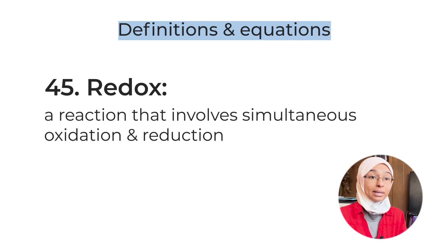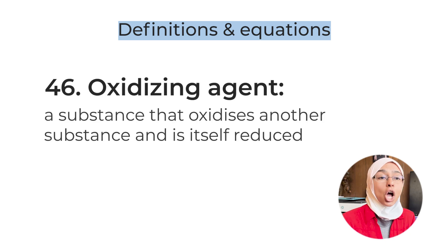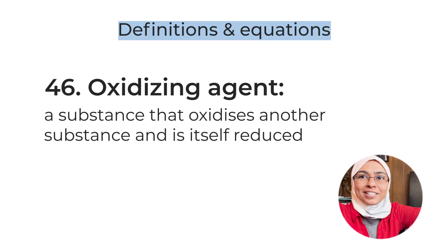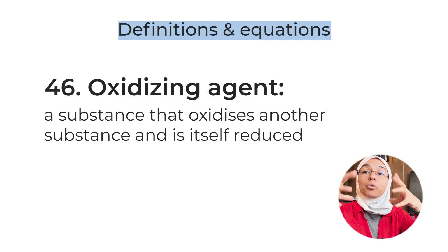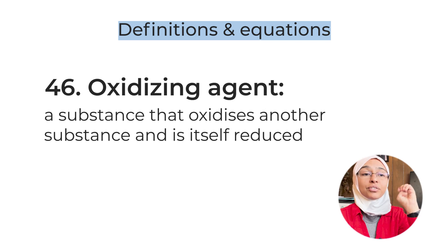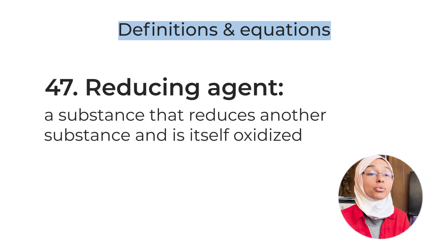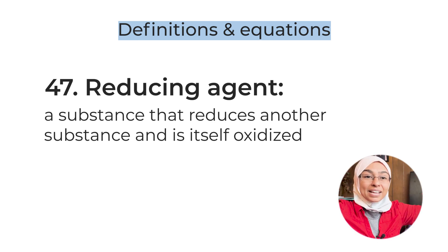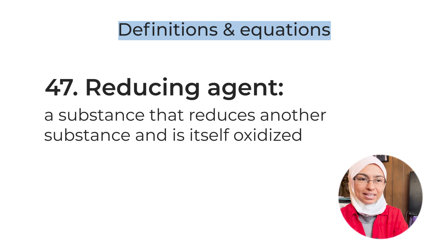Definition number forty-six: oxidizing agent — a substance that oxidizes other substances and itself gets reduced. Example: KMnO₄ is a strong oxidizing agent that oxidizes other substances while itself being reduced. Definition number forty-seven: reducing agent — a substance that reduces other substances and itself gets oxidized. Example: potassium iodide — it reduces other substances and itself gets oxidized in the process.